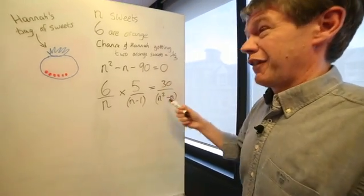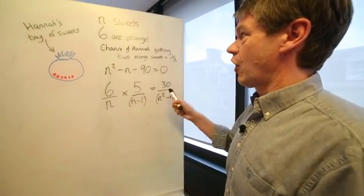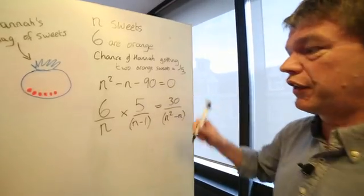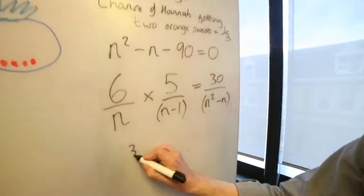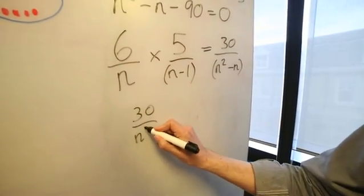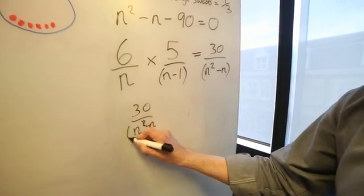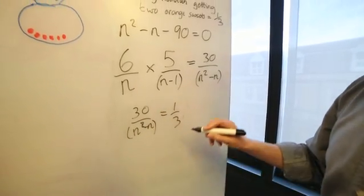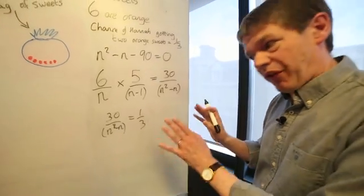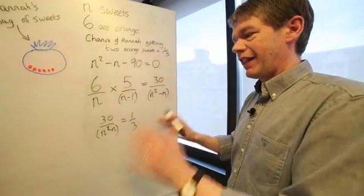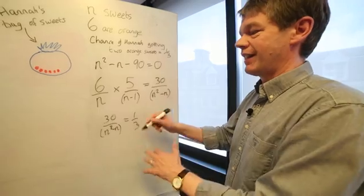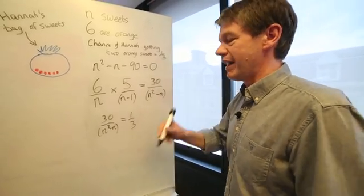Now that was the chance of her taking two orange sweets out, but we're told that that was one third. So 30 divided by N squared minus N equals one third. And no one tells us to do this, but this is what's being expected. Let's now rearrange this equation because it might end up looking like something more familiar.